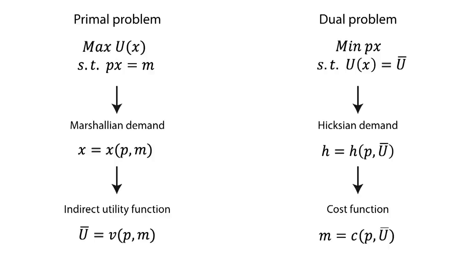We can also use substitution in order to get the demand functions using the indirect objective functions. If we substitute the indirect utility function in the Hicksian demand function, we get the Marshallian demand function. And if we substitute the cost function in the Marshallian demand function, we get the Hicksian demand function.